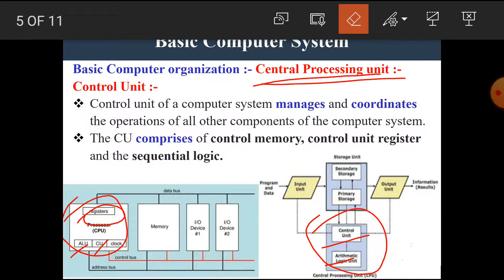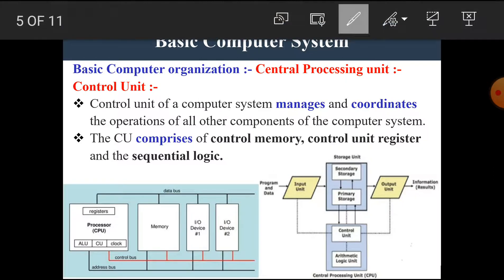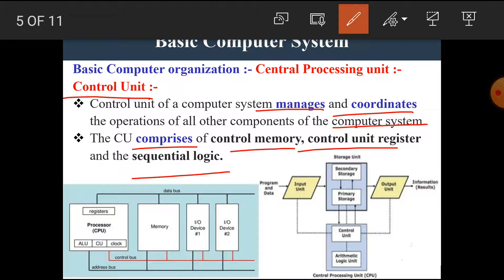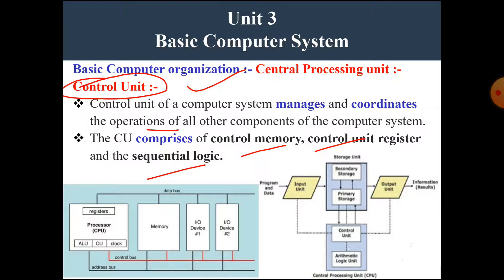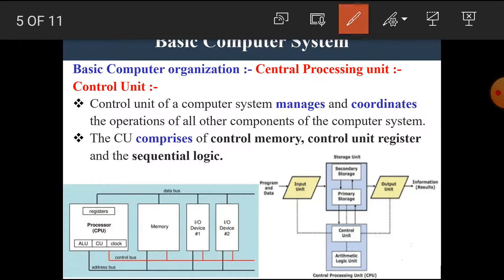Let's see what is the control unit. A control unit of a computer system manages and coordinates the operations of all other components of the computer system. The control unit comprises control memory, control unit register, and sequential logic circuit. In other words, the control unit is used to control, manage, or coordinate the various operations of all the other peripheral components of the computer system. I hope you all understand the function of the control unit.